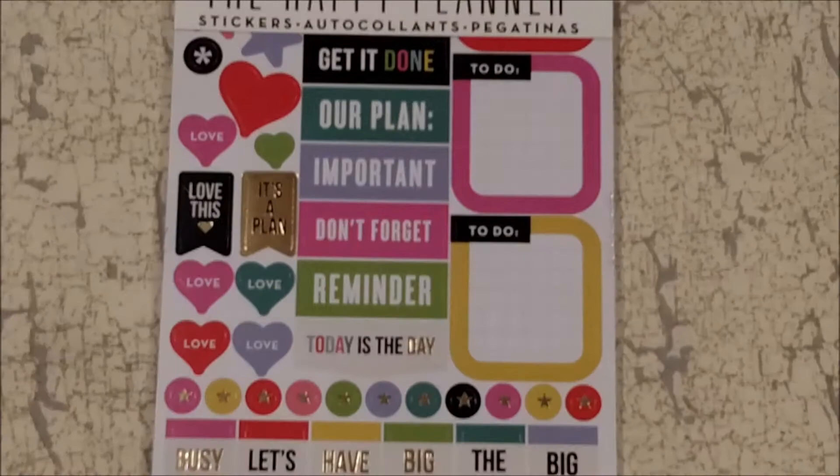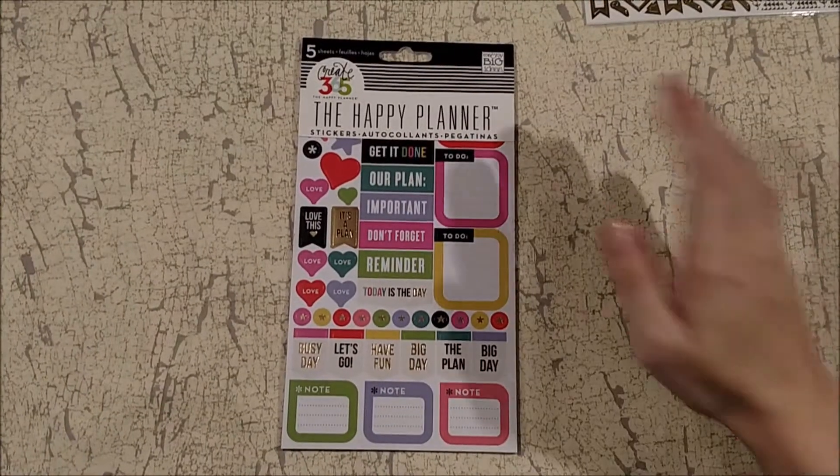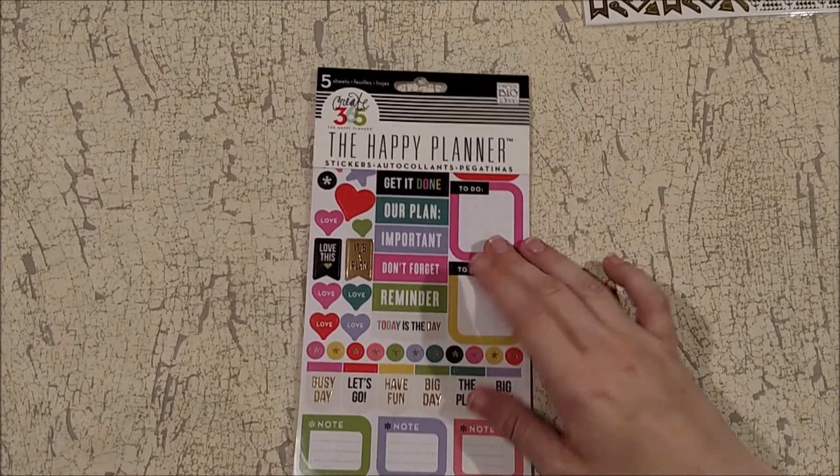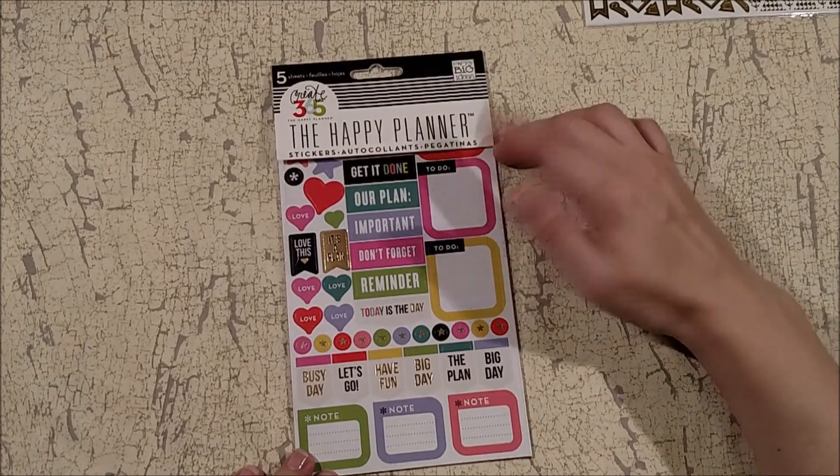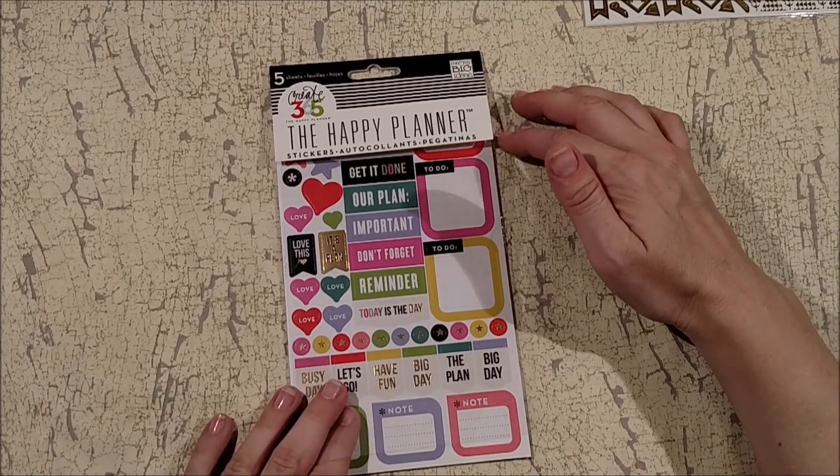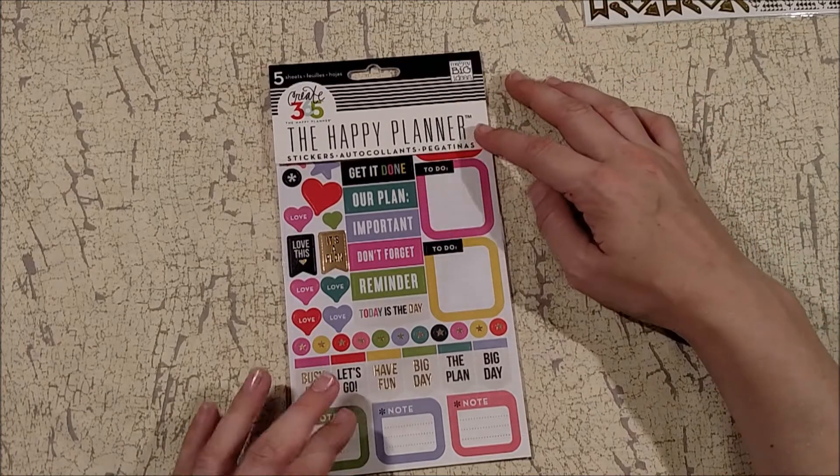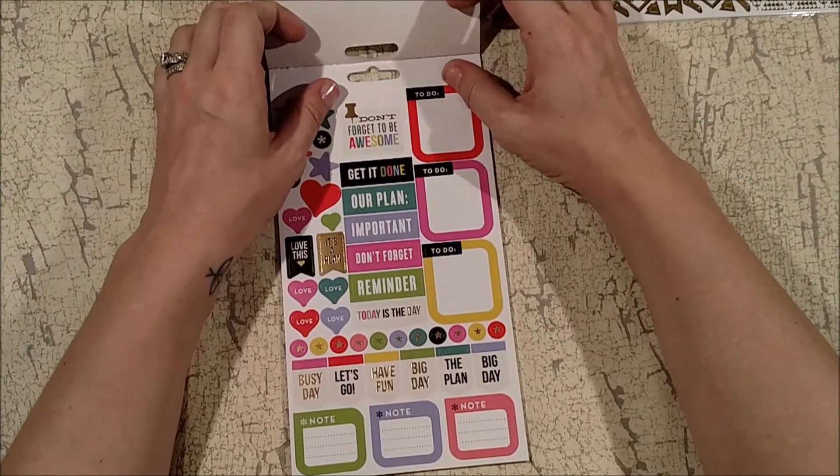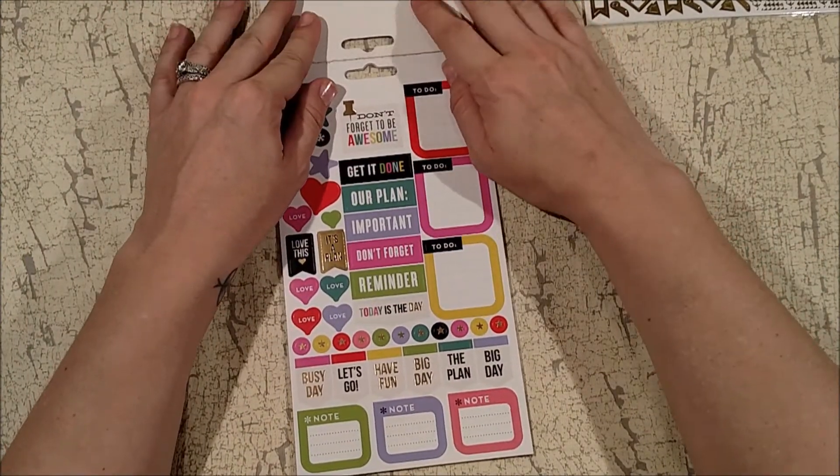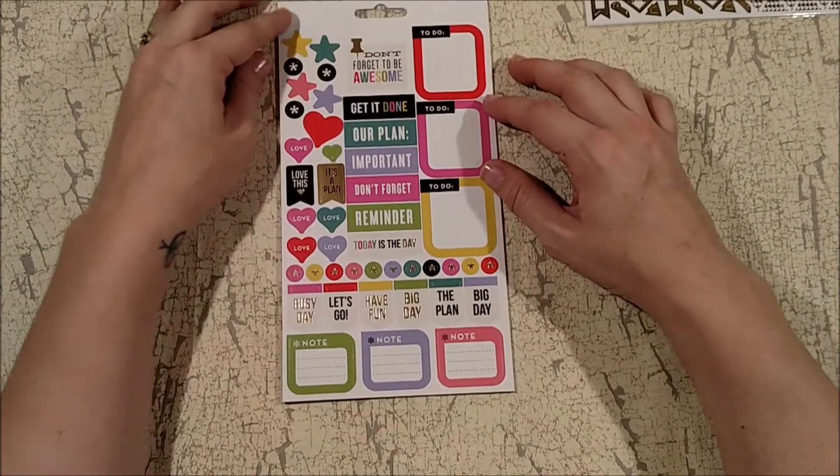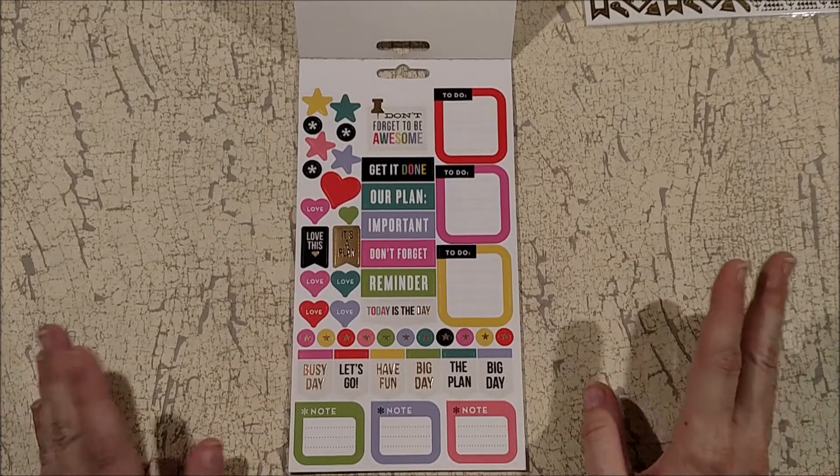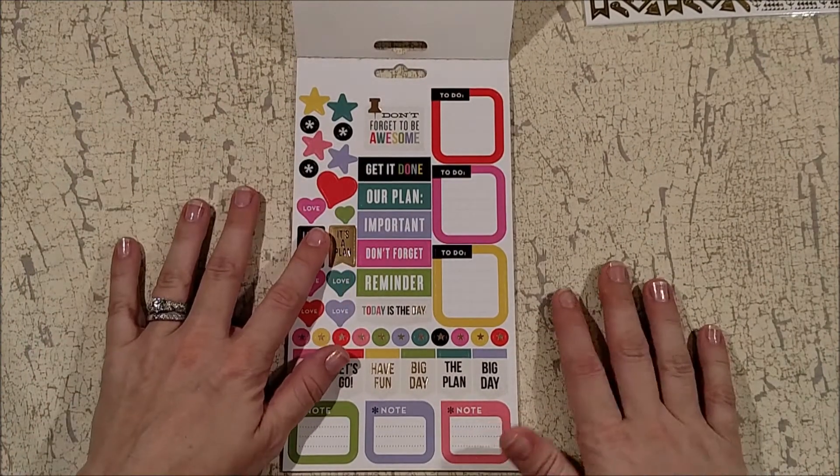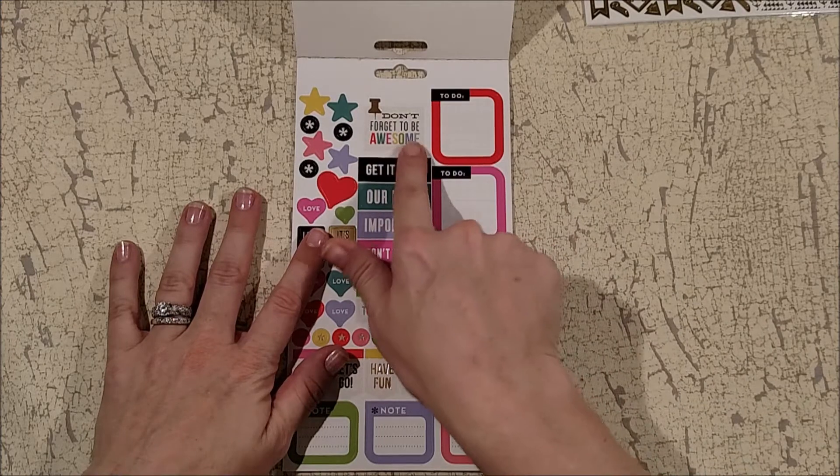And the last thing from Michael's is a new Happy Planner book. I went there specifically to get the big ones and they were out of stock. This one is just five sheets, it says 'planner sticker every day.' And I paid three dollars and 43 cents for this.